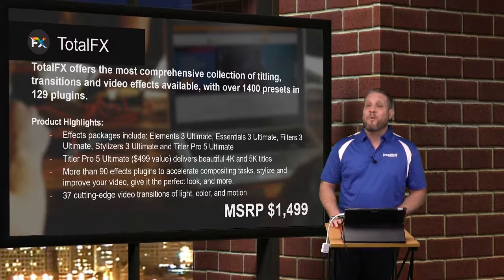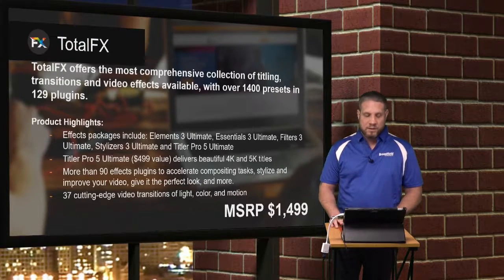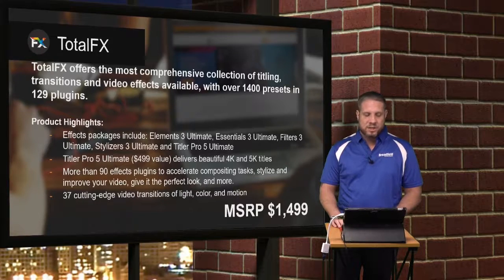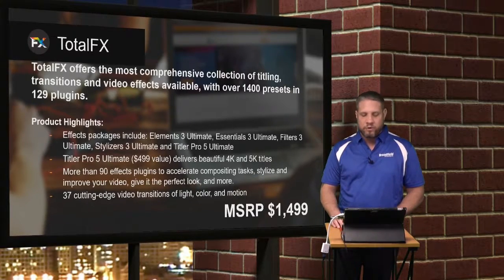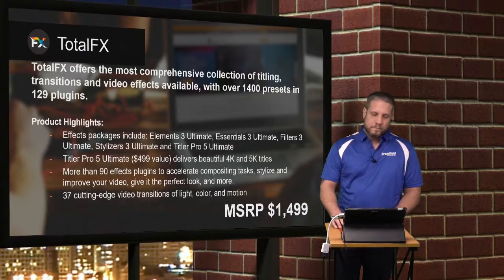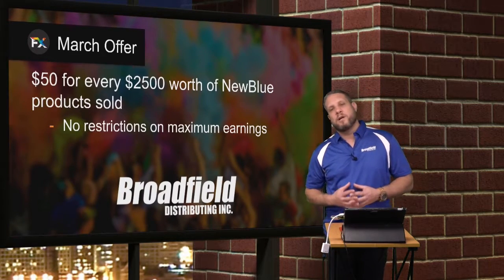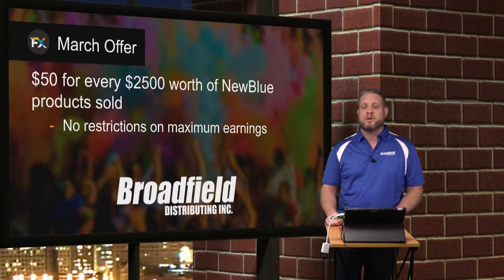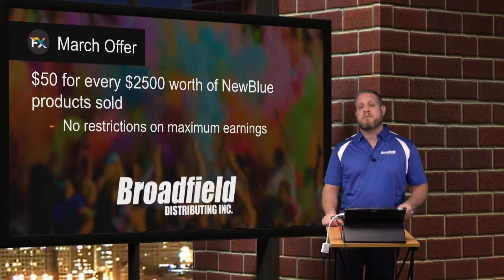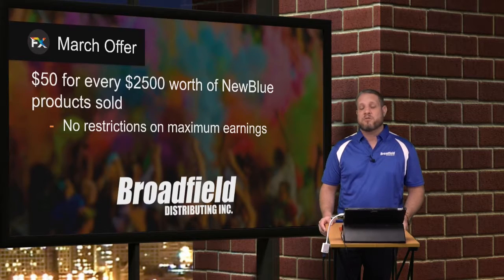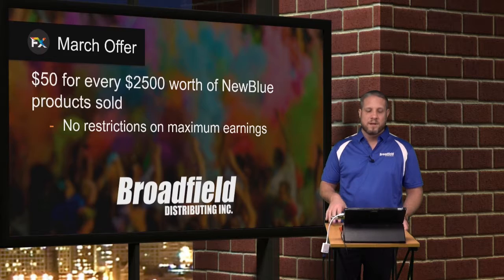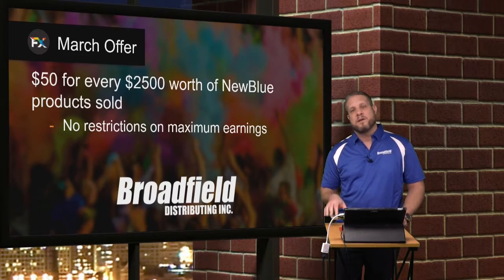Included in Total Effects, you get over 1,400 presets and 129 plugins — all of the new plugins we spoke about today, including Titler Pro 5 Ultimate and Filters 5 Ultimate. You also get Elements, Essentials, and Stylizers. There are more than 90 effects plugins for accelerating compositing tasks, stylizing, and improving your video for the perfect look, plus 37 video transitions of light, color, and motion. All of this adds up quickly, especially if you're bundling Total Effects with your NLE sales, reaching out to current NLE customers, or attaching Titler Live upgrades to Wirecast Gear or TriCaster sales. For every $2,500 you purchase from Broadfield in March, there is a $50 SPF — no restrictions, no maximums.